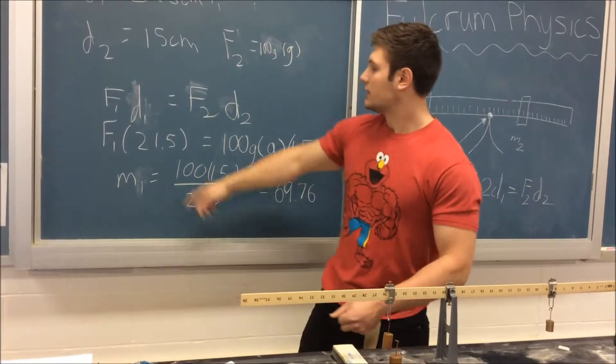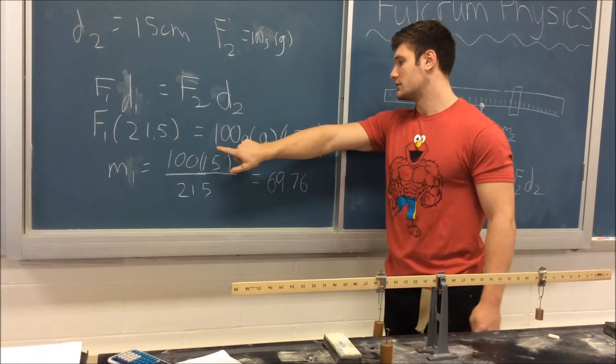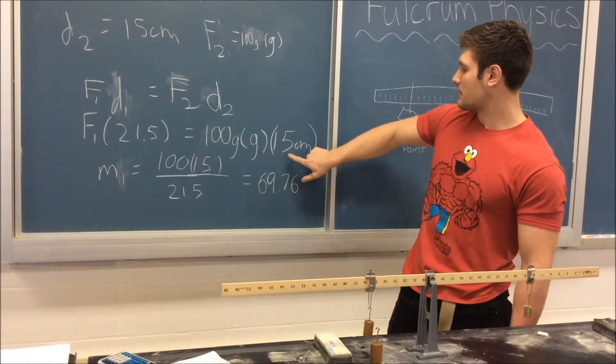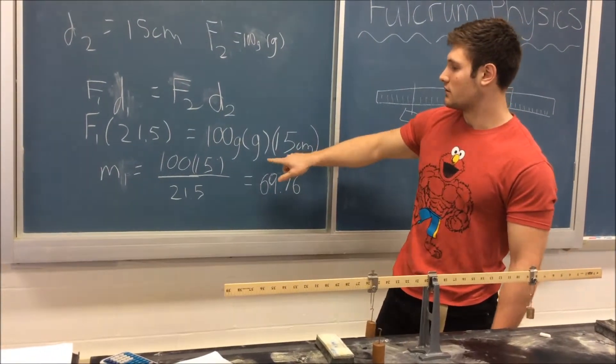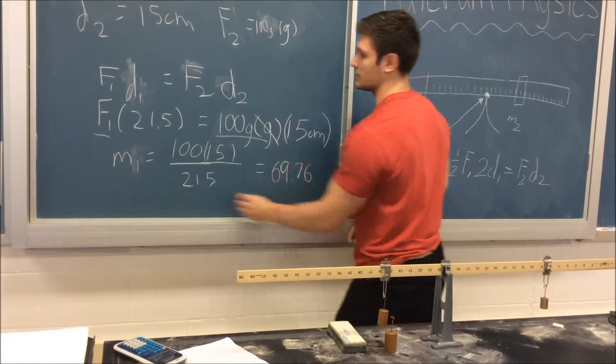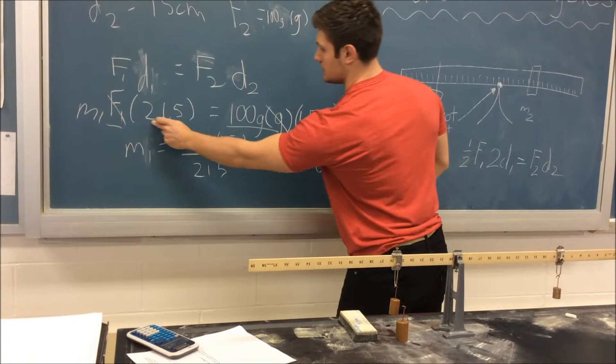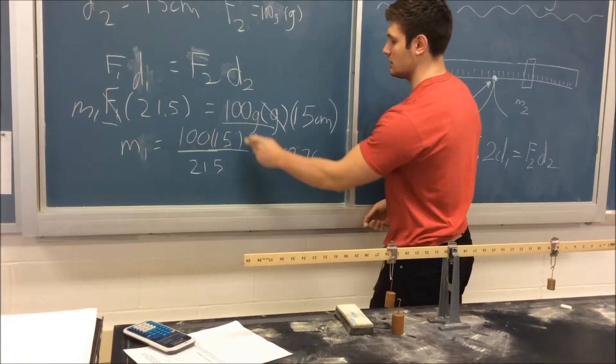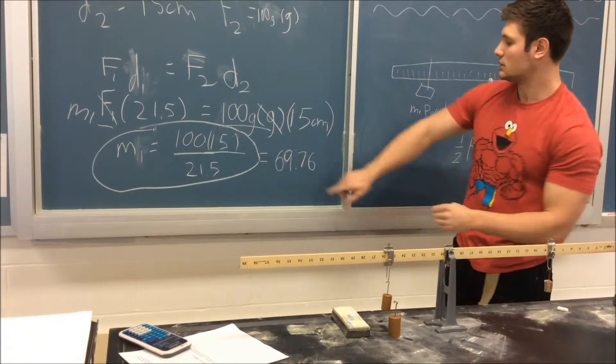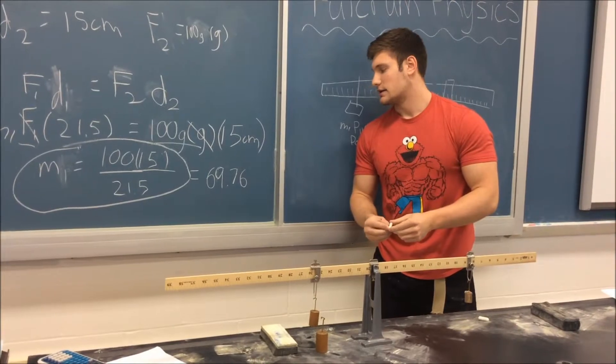We can just plug each other. So F1 times 21.5 centimeters is equal to 100 grams times G times 15 centimeters. You'll see that you have a force and you have a force, so the G's will cancel, and you'll just be left with M1. All you need to do is divide this 21.5 centimeters over to this side, and your master equation is right over there, which equals 69.76 grams.